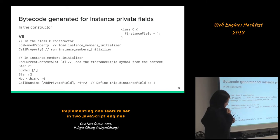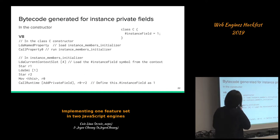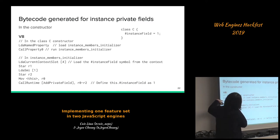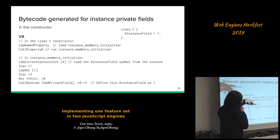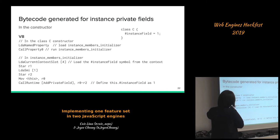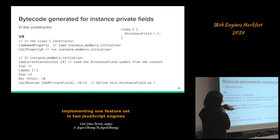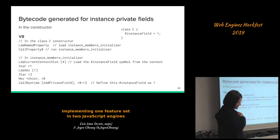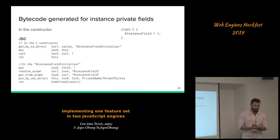In V8, during instantiation of the class we first load the instance member initializer from the class constructor using the symbol. Then we call it. In the initializer we load the private symbol for that field from the context using the statically known slot index, evaluate the initializer — which is 1 in this case — load the integer 1, and then call into another runtime function 'add_private_field' which adds the result of the initializer to the instance as a symbol property.